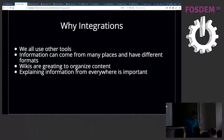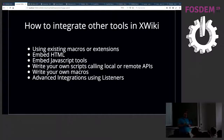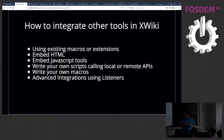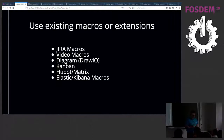So how do we make integrations in XWiki? We can either use existing macros and extensions, embed HTML, embed JavaScript tools, write our own scripts to call local or remote APIs, write our own macros, or do advanced integration using listeners. I'll try to show a bit of everything. For existing macros and extensions, examples include Jira macros, video macros, diagrams, Kanban, uBot, or Elasticsearch.